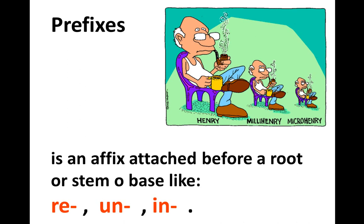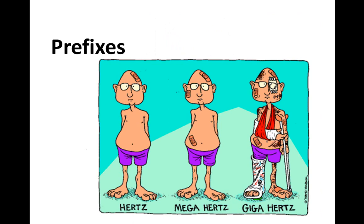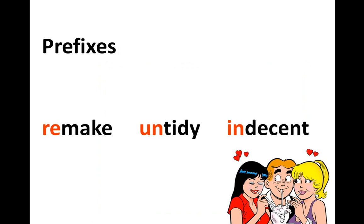More prefix examples: 'pro-,' 'anti-' as in 'anti-racism,' 'antichrist.' You can make many combinations with prefixes. 'Hertz,' 'megahertz,' 'gigahertz' — the prefixes in red are placed before the original word. 'Remake' means to make something again. 'Untied' describes someone not very organized. 'Indecent' describes behavior not normal in our culture.